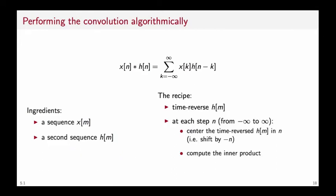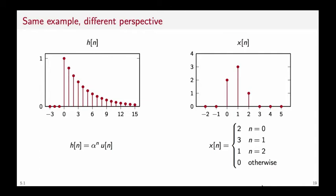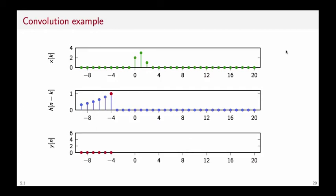The convolution, which represents the output of a filter given its impulse response and an arbitrary input sequence x of n, is actually an algorithmic formula to compute the output of the filter. The ingredients are an input sequence x of n and a second sequence h of n. And the recipe involves the following steps. First, we time-reverse the impulse response, so we flip it in time. If it goes like this, then it will look like this. And at each step, from minus infinity to plus infinity, we center the time-reversed impulse response in the current sample n. So we shift the time-reversed impulse response by minus n. And then we compute the inner product between this shifted replica of the impulse response and the input sequence.